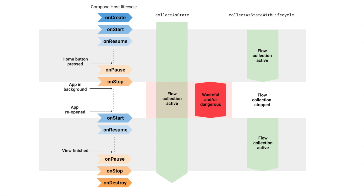Next, collectAsStateWithLifecycle. This method with lifecycle helps you collect up to on-start. If you use the normal collect, it works through on-stop. But collectAsStateWithLifecycle stops collecting at on-stop and resumes at on-start, so if you press the app into the background and reopen it, the state is propagated correctly. This is an actual new API — extension functions introduced to make flows work lifecycle-awarely.